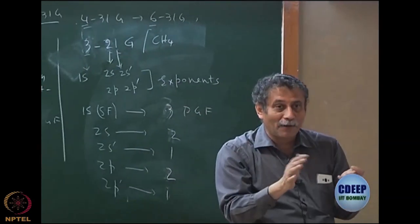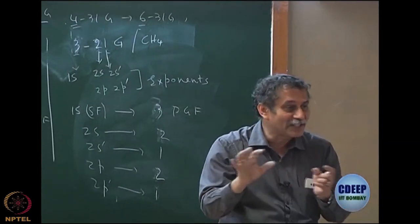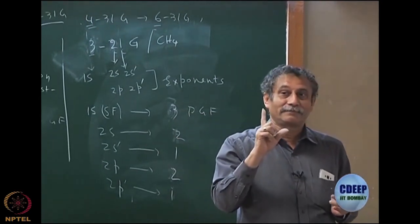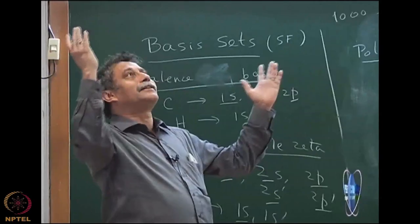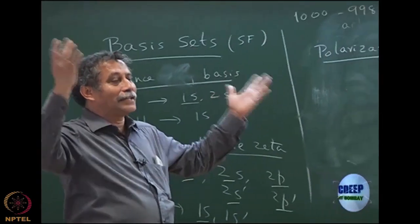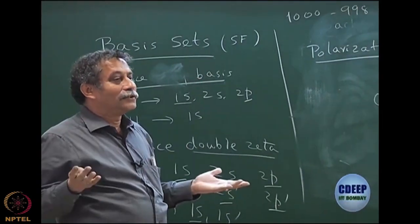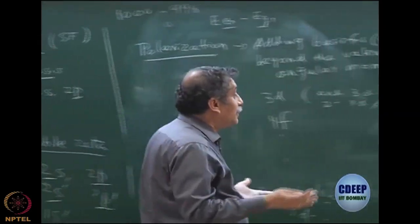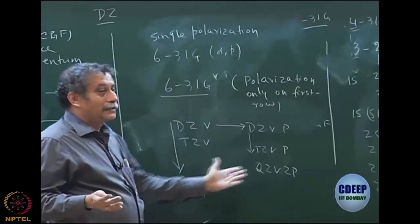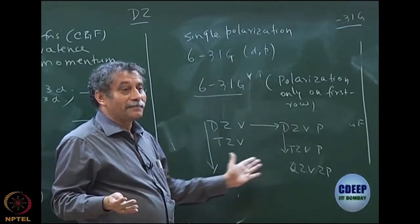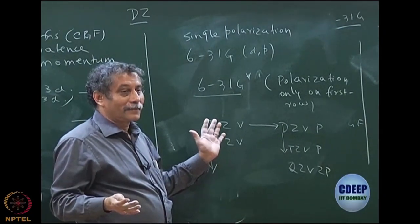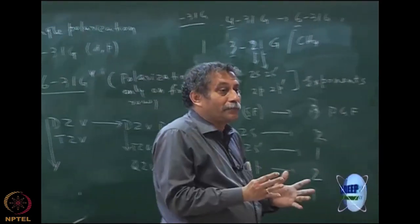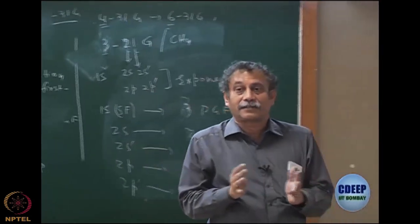The computer gives you a physical upper bound; now scale down within it. The art is: how do I choose a basis set which will fit my computer and yet give satisfactory results? People have found that instead of just going double-zeta to quadruple-zeta, you should also start populating the higher angular momentum functions, otherwise you will get an unbalanced basis set and the results will not be good.